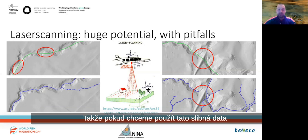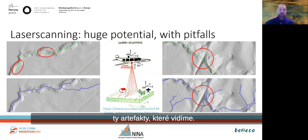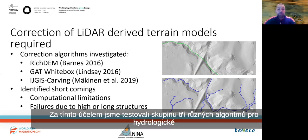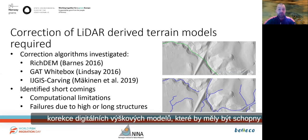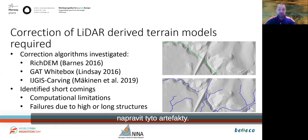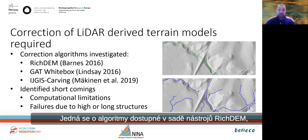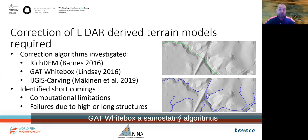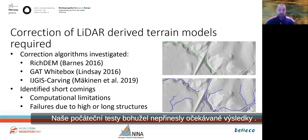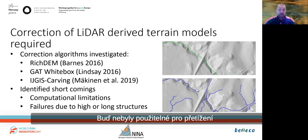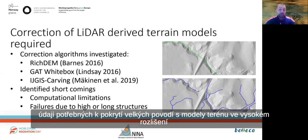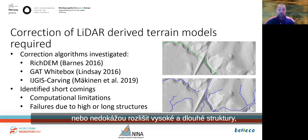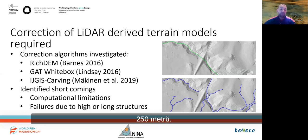So if we want to use this promising high-resolution terrain data source, we need to correct those artifacts. We tested mainly three different algorithms for hydrological correction of digital elevation models that should mend those artifacts by cutting through them. Those algorithms are available in the SAGA GIS toolset, the WhiteboxTools, and the dedicated algorithm IJGIS-Carve. Unfortunately, our initial tests did not yield the results we hoped for — either they were not applicable to the amount of data required to cover large catchments, or they failed to correct high and long structures present in our study areas, with culverts of up to 250 meters in length.